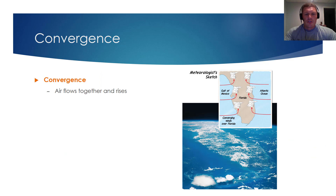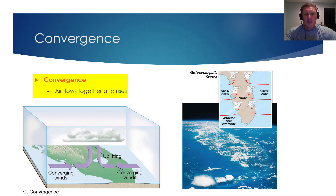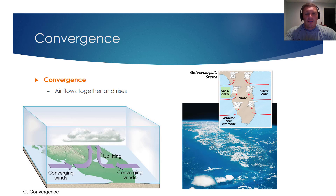The third process we'll consider for lifting air is convergence. Quite simply, convergence is when air flows together and then rises. One common thing I hear from people who visit Florida is that there were a lot of afternoon thunderstorms. There's a very specific scientific reason for that, due to Florida's unique geography: to the left side of the Florida Peninsula you have the Gulf of Mexico, and to the right side you have the Atlantic Ocean.